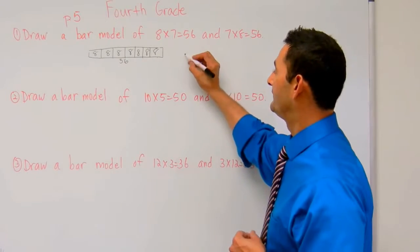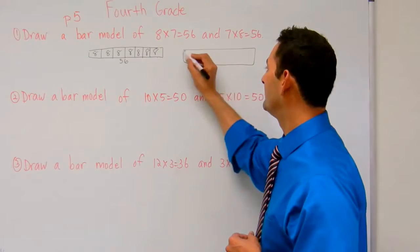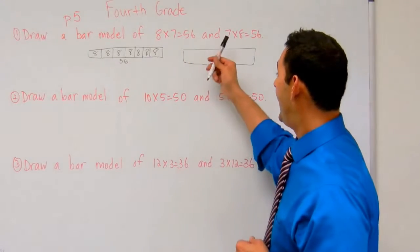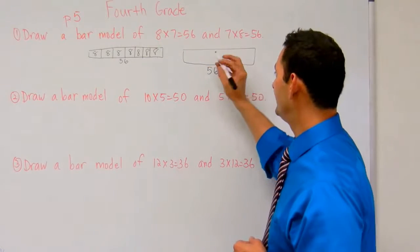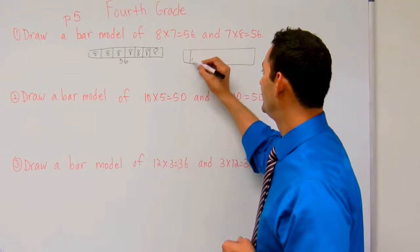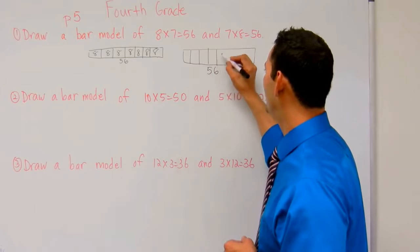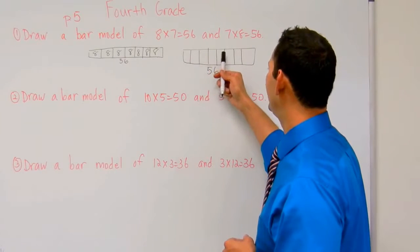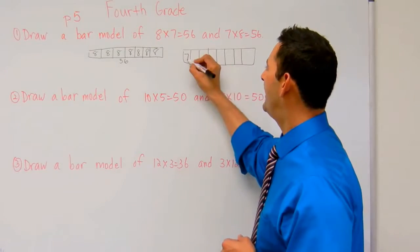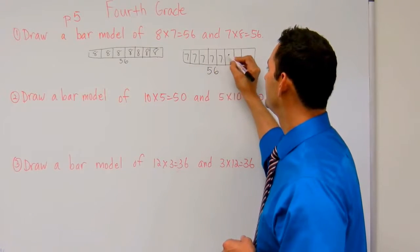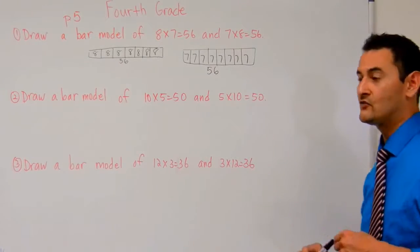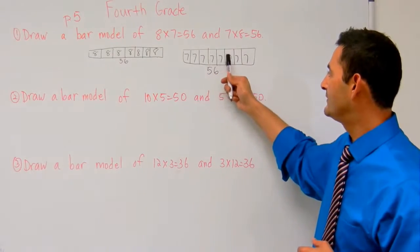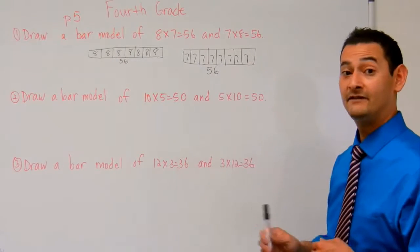Now let's take a look at the next way. I'm going to draw this bar model again. Here I have 56, and now it says 7 times 8 equals 56. So now I'm going to do 8 sections — 1 through 8 — and each of these pieces is going to be 7. So 7 times 8 equals 56.